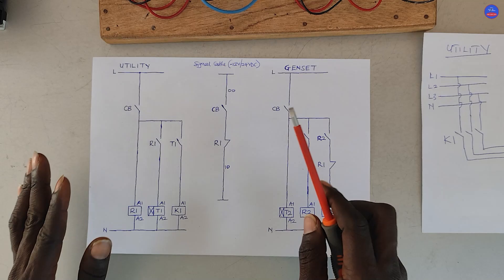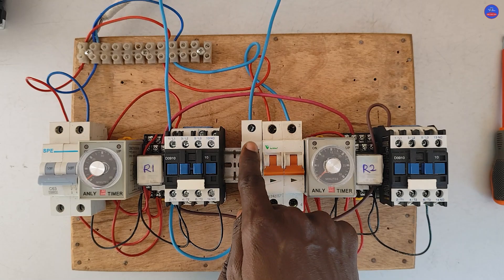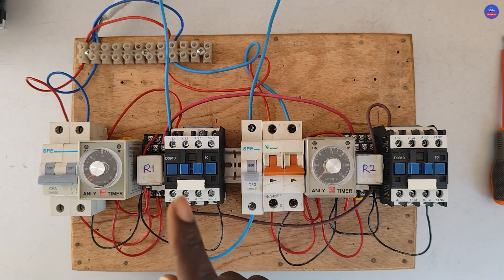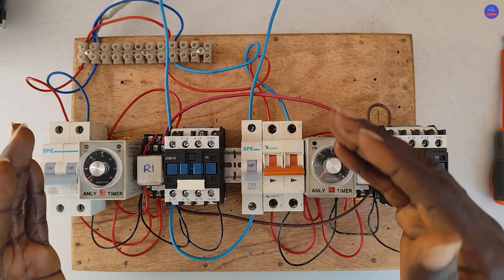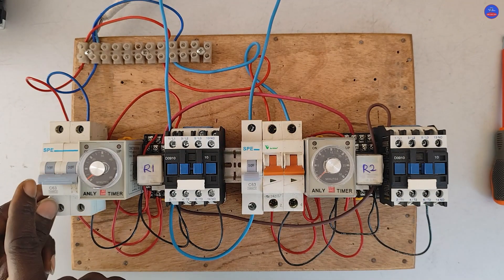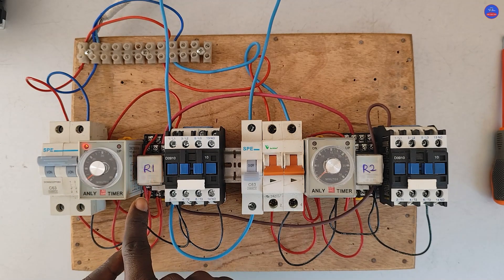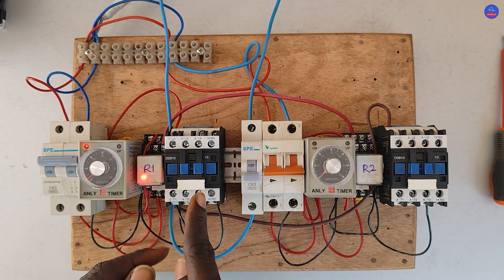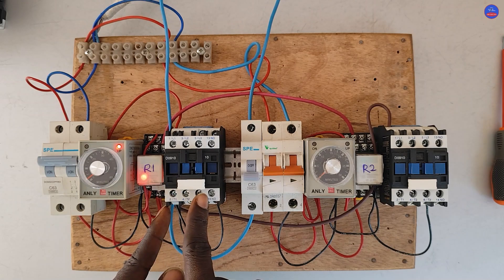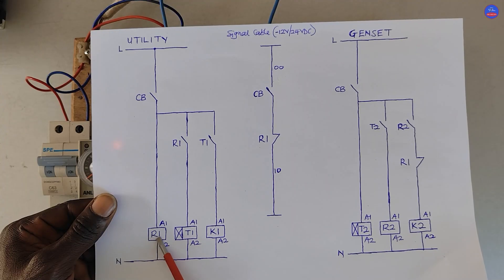So this is how automatic changeover switch works. Now let's test the wiring and see how it will operate. Right now the signal breaker is off, and at the same time the control breaker for the genset is also off. I have set the timers — you can also set it depending on how you want the switching to occur. I am turning on the control breaker for the utility power. The timer and R1 are energized. After the preset time, K1 would energize — it is energized now. These contacts have closed, so now power is at the load.